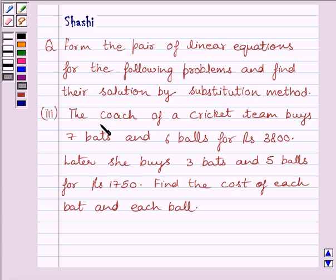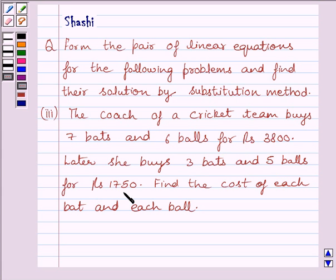The coach of a cricket team buys 7 bats and 6 balls for Rs. 3800. Later she buys 3 bats and 5 balls for Rs. 1750. Find the cost of each bat and each ball.